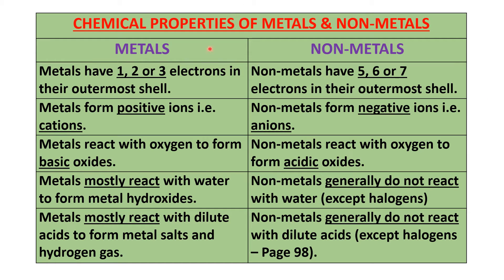Metals usually have one, two, or three electrons in their outer shell. Whereas non-metals, they generally have either five, six, or seven electrons in the outer shell — that is the last shell, or what you call the valence shell.